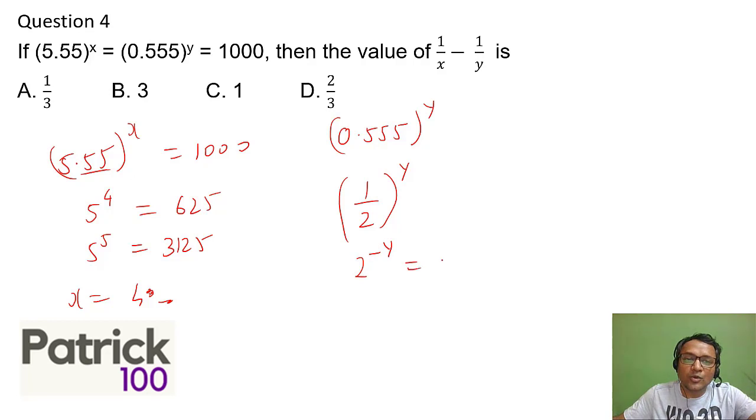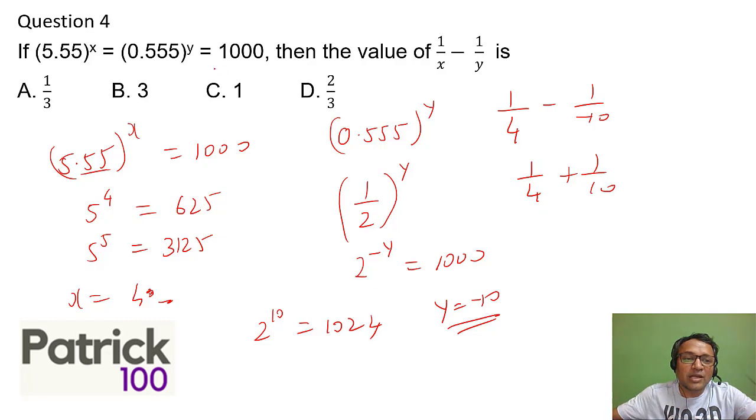Let me take this as 0.5 which will come to half raised to y, right, or you can say 2 raised to minus y equal to 1000. Now I know 2 raised to 10 is 1024. 2 raised to 10 is 1024, that means y will be minus 10 approximately. These are all approximation values, so I can substitute out here. So 1 upon 4 minus 1 upon minus 10 is approximately 1 upon 4 plus 1 upon 10. Now both are very small values so automatically 3 and 1 is ruled out. Two-third also will not be possible because 1 by 4 is 0.25, 1 by 10 is 0.1, it will come to approximately 0.35 which will come to 1 by 3.